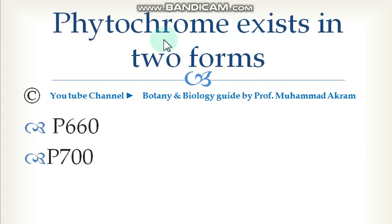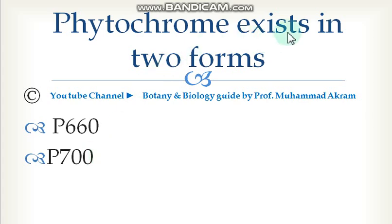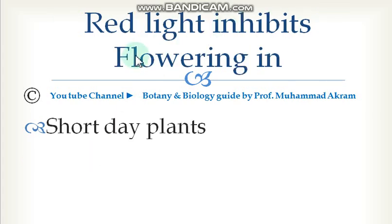Phytochromes in plants exist in two forms: the first one is P660 and P700. Red light inhibits flowering in short day plants.